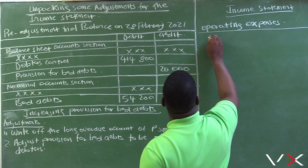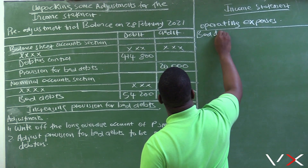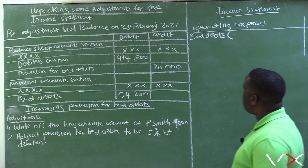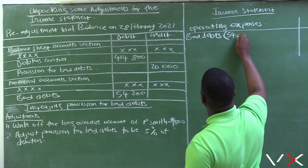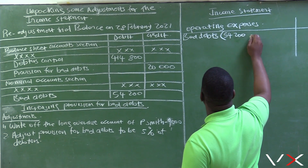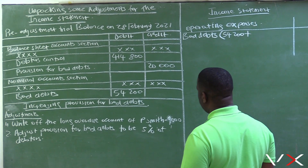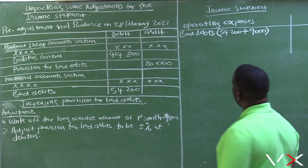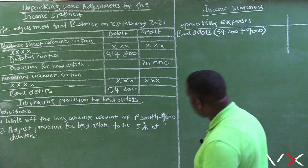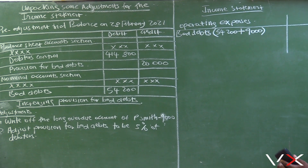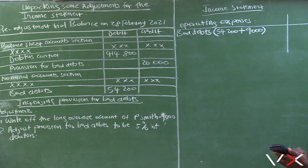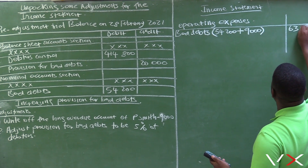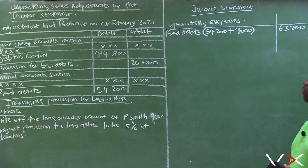Under operating expenses it will be bad debts, because we are writing off a further R9,000 of bad debts. The current bad debts value in the trial balance is R54,200, and this will increase by R9,000. So the total bad debts now for the year under operating expenses in your income statement will be R54,200 plus R9,000, which equals R63,200.